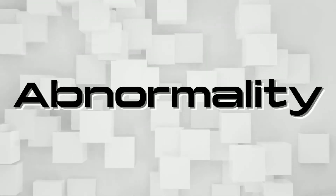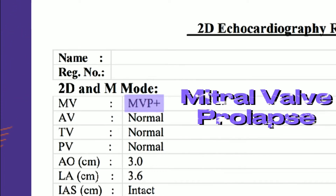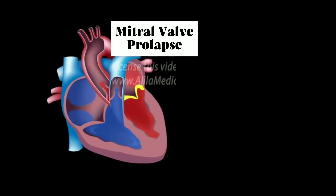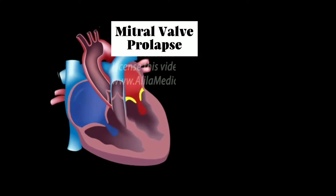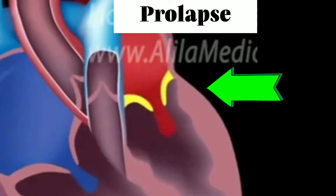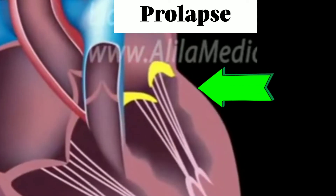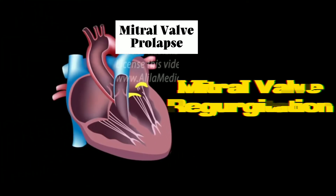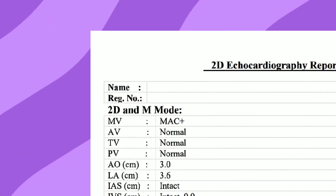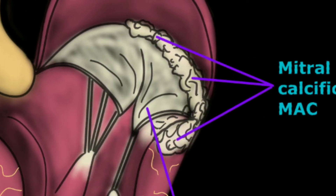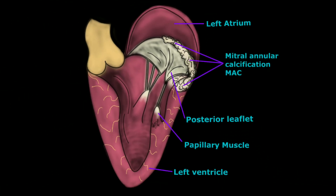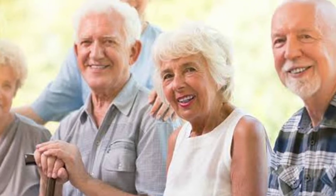Let's see abnormality. MVP means mitral valve prolapse. A prolapsed mitral valve means that the valve's flaps do not always fit and close properly between each beat of the heart, which may cause the valve to leak blood backward through the valve back to the left atrium. This condition is called mitral valve regurgitation. MAC means mitral annular calcification, a chronic progressive condition involving the fibrous annulus of the mitral valve, generally seen in elderly patients.